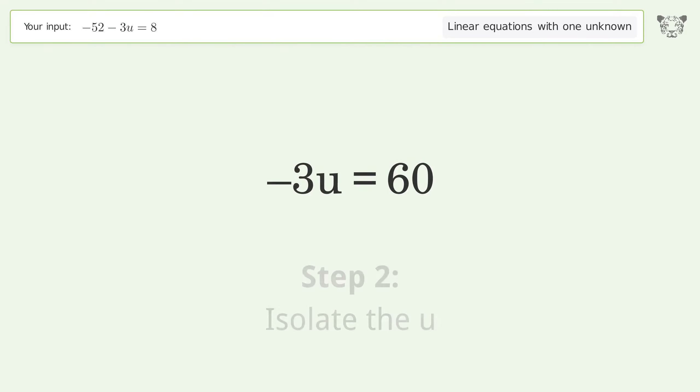Isolate the u. Divide both sides by negative 3. Cancel out the negatives. Simplify the fraction.